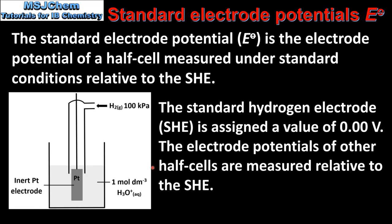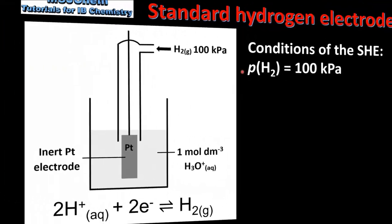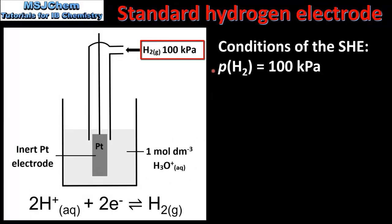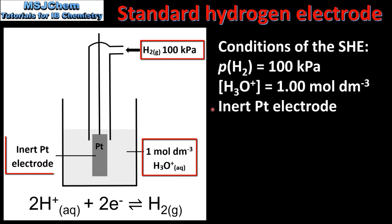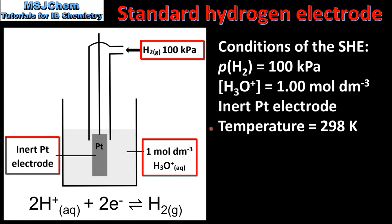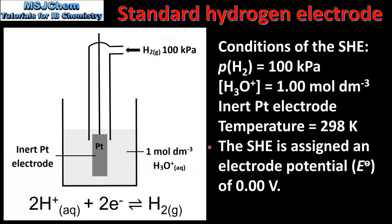Next we look at the conditions of the SHE: hydrogen gas at a pressure of 100 kPa, a solution of hydronium ions with a concentration of 1 mole per cubic decimetre, an inert platinum electrode, and a temperature of 298 K. The SHE is assigned an electrode potential of 0 volts.